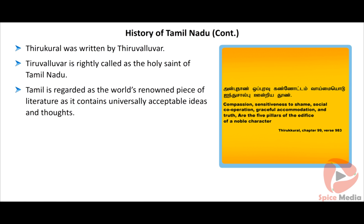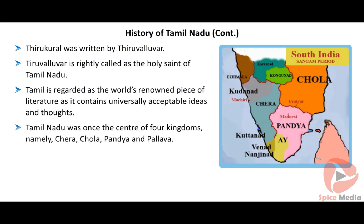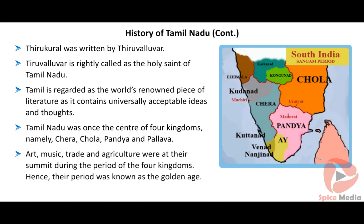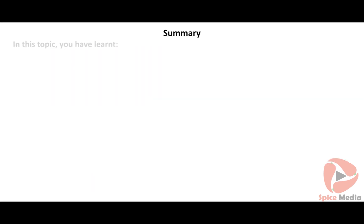Tamil language, which obtained Sammoli status, is the eighth one of its kind. Tamil Nadu was once the centre for four kingdoms, namely Chera, Chola, Pandya, and the Pallavas. Art, music, trade, and agriculture were at their summit during the period of the four kingdoms. Hence their period was known as the Golden Age.